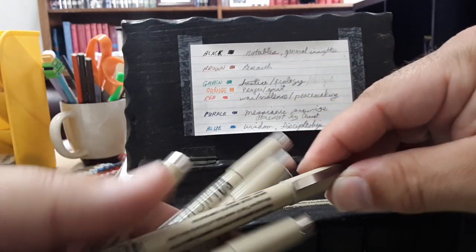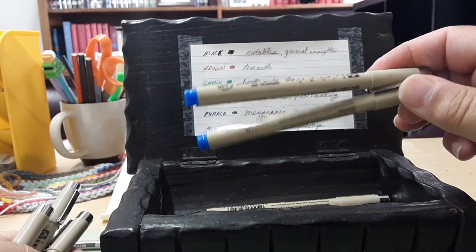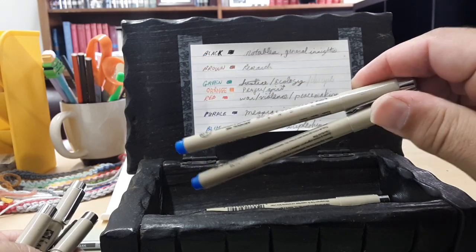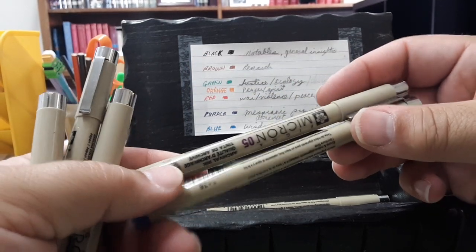Blue. Let me see. I have two blues. I guess you can never have just one micron. Blue is wisdom or discipleship. So anything having to do with discipleship and wisdom.